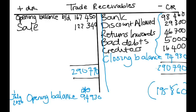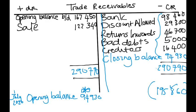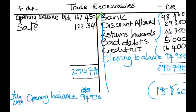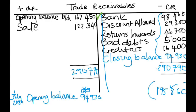You may ask why we only did one account — every transaction has two accounts involved, but this question only asked us to prepare the debtors control account. When we receive settlement, bank is credited here. When we go to the bank account, we debit debtors because we received money from them — so bank will be debited with debtors of $98,460.